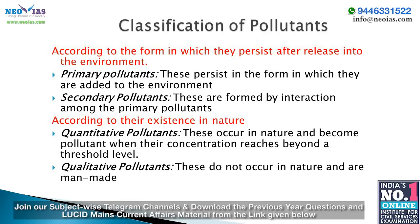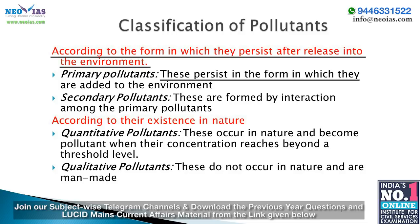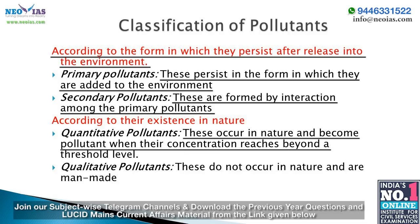Pollutants are classified according to the form in which they persist after release into the environment: primary pollutants persist in the form they are added (e.g., DDT, plastic), and secondary pollutants are formed by interactions among primary pollutants (e.g., PAN — peroxyacetyl nitrate — formed by interaction of nitrogen oxides and hydrocarbons). The second classification is by existence in nature: quantitative pollutants occur in nature and become pollutants beyond a threshold (e.g., CO₂, nitrogen oxides), while qualitative pollutants are man-made and do not occur in nature (e.g., fungicides, herbicides, DDT).